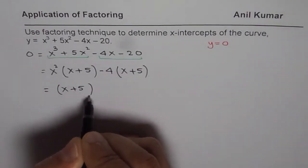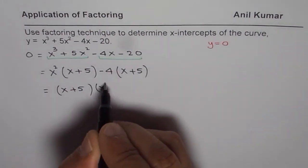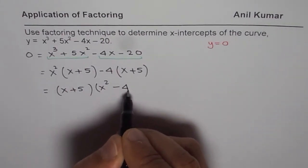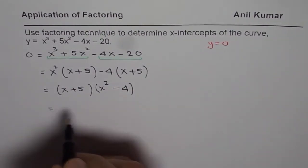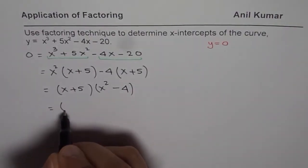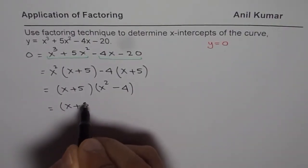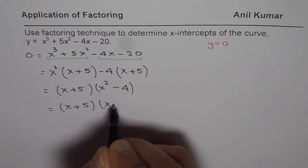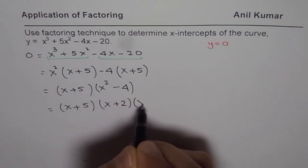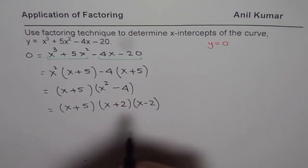(x + 5), what do we get here? We get x² and minus 4 from this side. So, this is the difference of squares. It could further be factored as (x + 5)(x + 2)(x - 2).